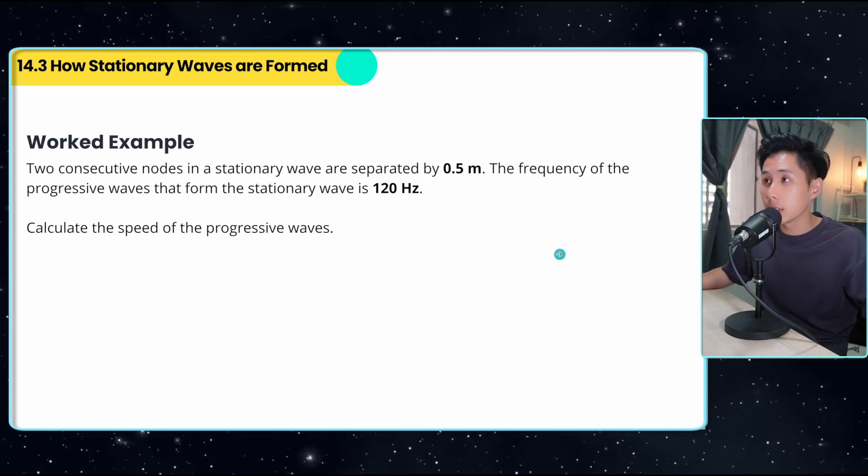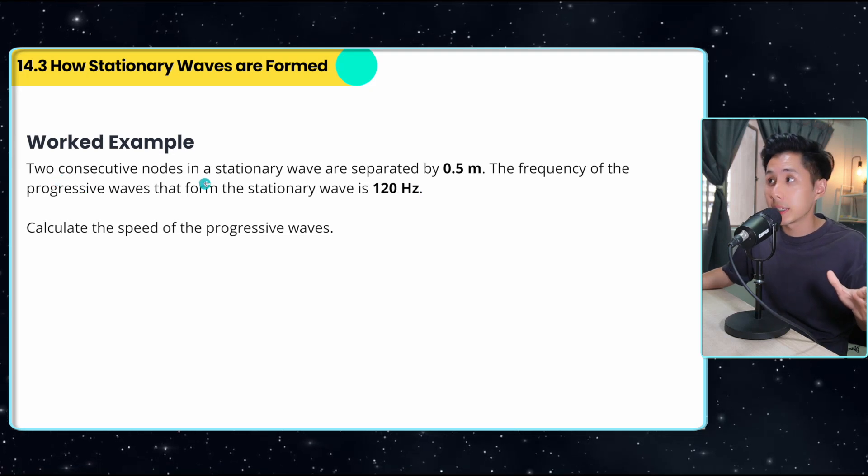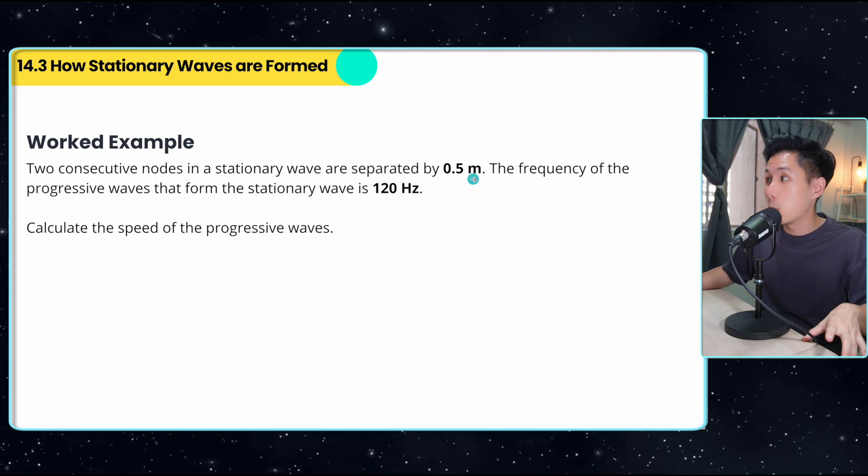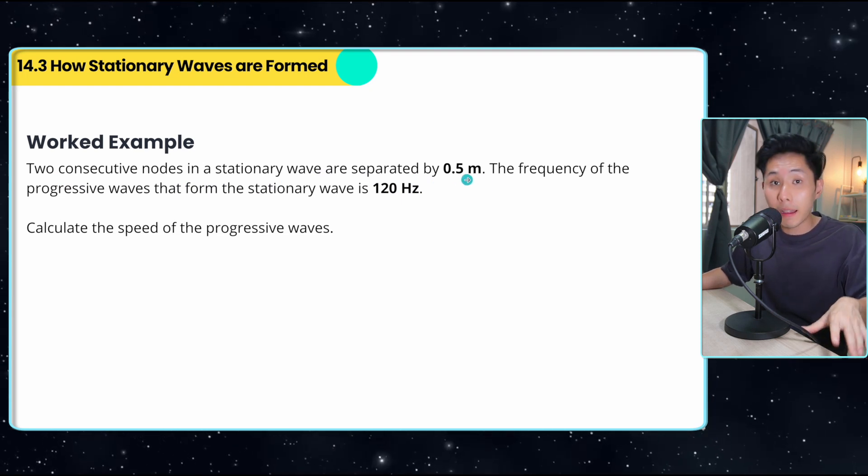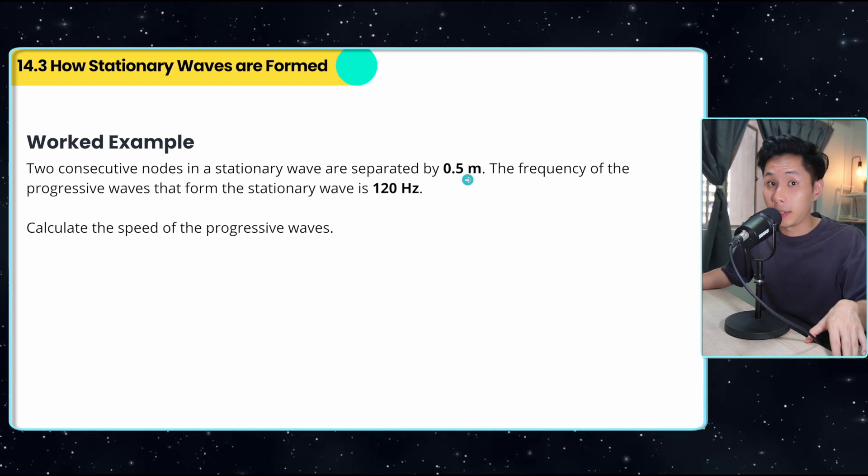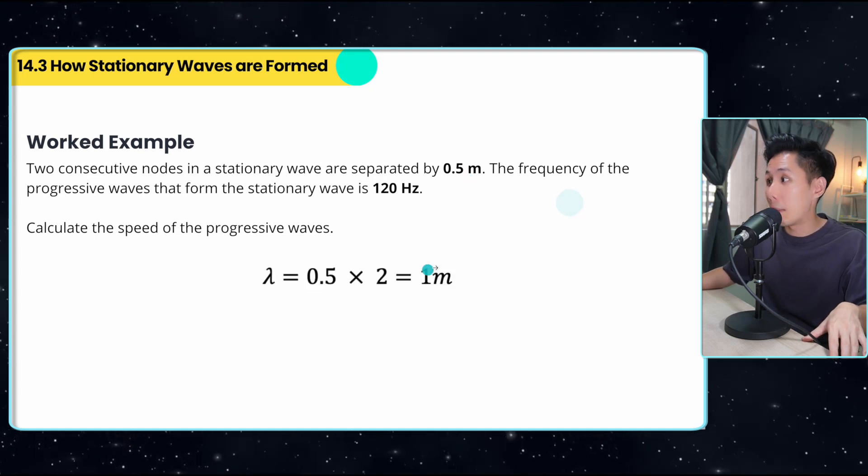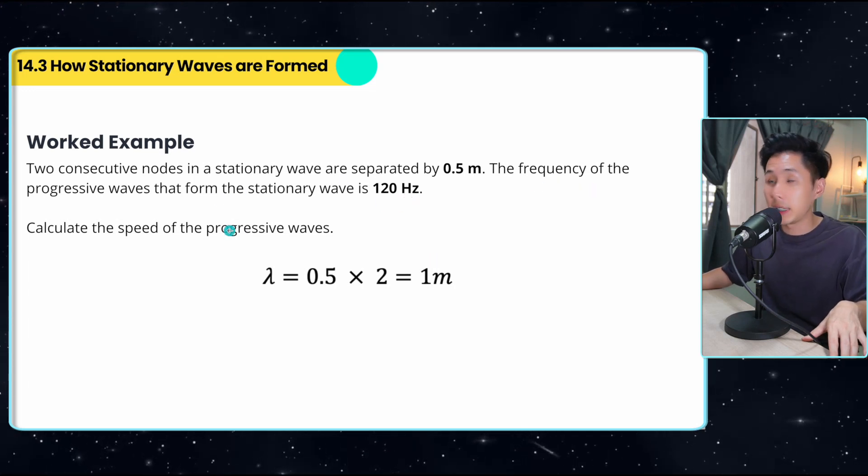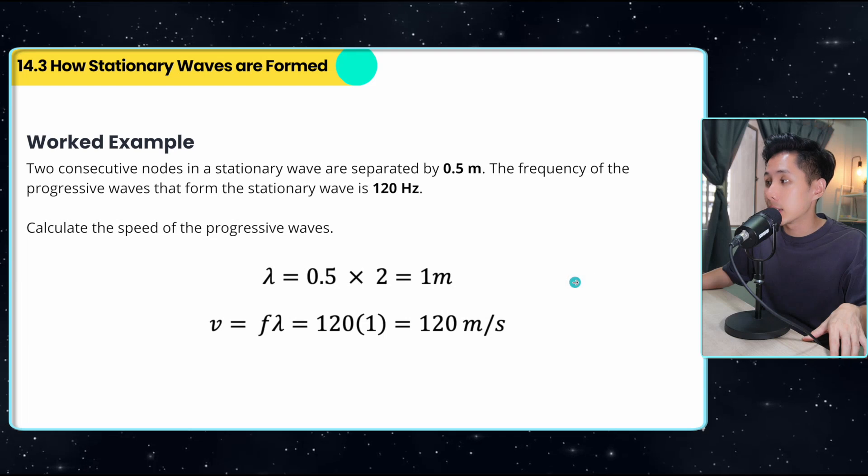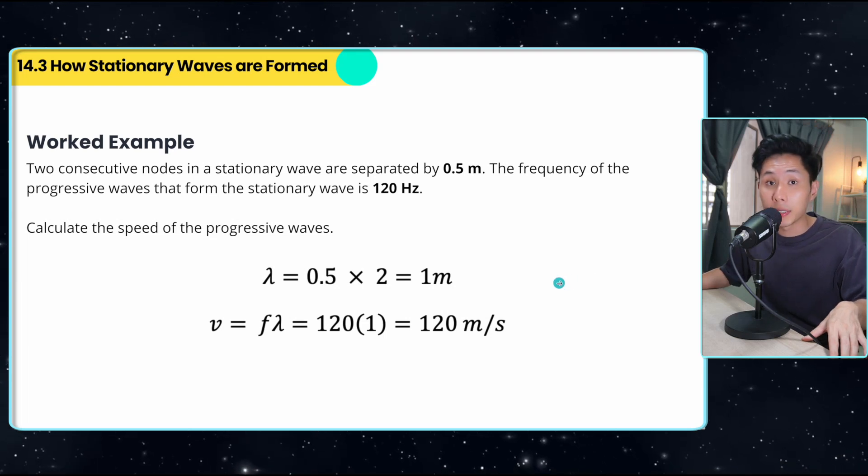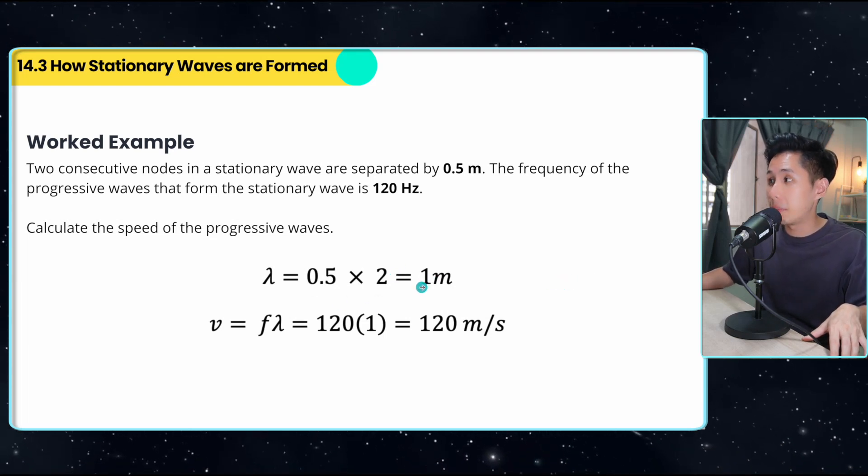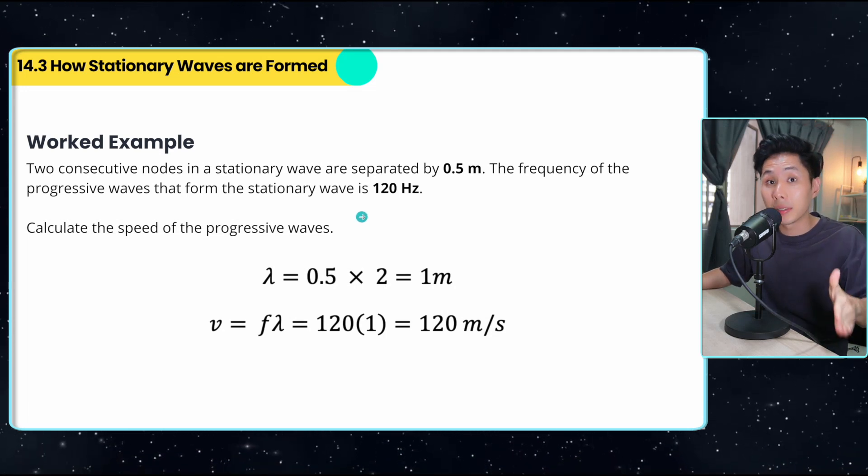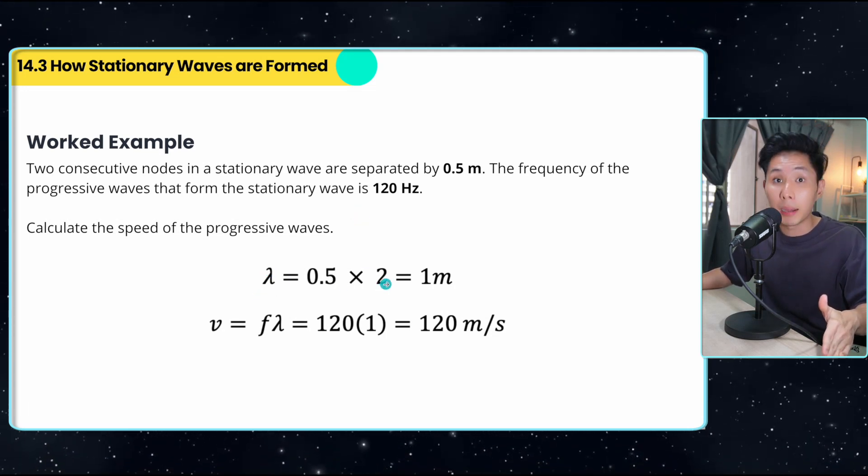Now, having talked so much, let's solve some questions. Two consecutive nodes in a stationary wave are separated by 0.5 meter. So what this tells us is that 0.5 meter is half the wavelength, which means that a full wavelength is equal to one meter. And then they give us the frequency of the wave is 120 hertz, calculate the speed. With frequency and lambda, I can just multiply them together to get the velocity of the speed wave. Again, the reason why this is one meter is because the two consecutive nodes equal to half the wavelength. But because I want the wavelength, that's why I multiplied by two.